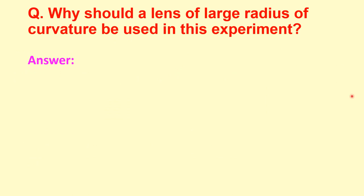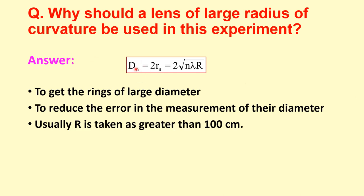Why should a lens of large radius of curvature be used in this experiment? Because the diameter of the rings depends on the radius of curvature — it is proportional to the square root of R. So to get rings of large diameter, a large radius of curvature lens is used, which also reduces errors in the measurement of the diameter. Usually the value of R is around 100 centimeters or greater.